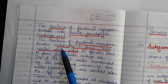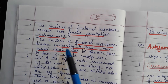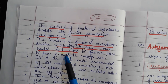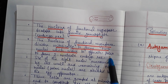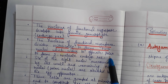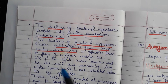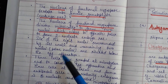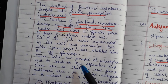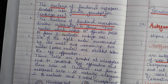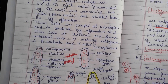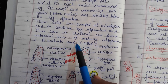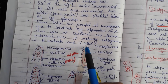The functional megaspore continues mitotic equational divisions. After successive divisions, the nuclei increase from 2 to 4 and then to 8, resulting in an 8-nucleate, 7-cell structure.